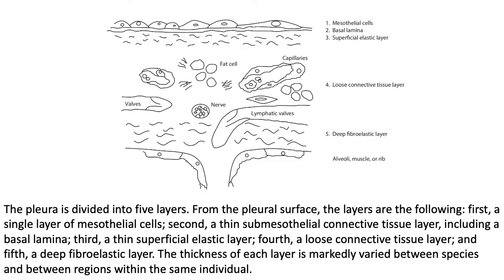Looking at the five layers of the visceral pleura from the pleural surface: first, a single layer of mesothelial cells; second, the thin sub-mesothelial connective tissue which includes the basal lamina; third, a thin superficial elastic layer; fourth, a loose connective tissue layer containing capillaries, fat cells, valves, nerves, and lymphatic valves; and fifth, the deep fibroelastic layer, beyond which you have the alveoli.